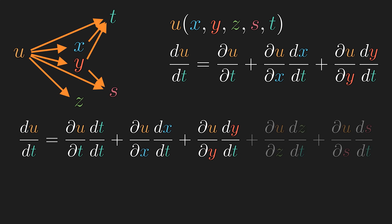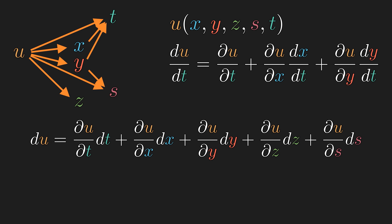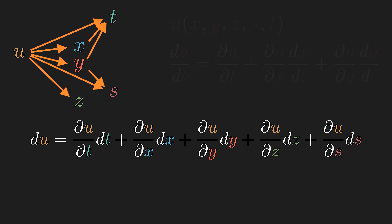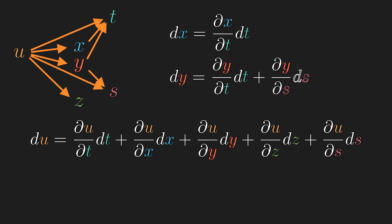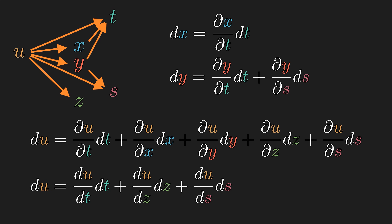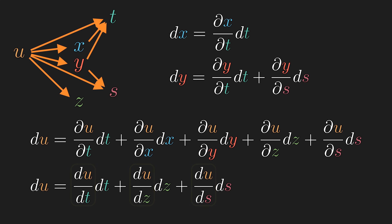This begs the question: what is the differential of u? We can start with the naive definition, then simplify. We want to remove all intermediate variables. x depends only on t, so dx equals the derivative of x with respect to t times dt. And dy has two terms, since y depends on both t and s. The last step is to rearrange and write this as a linear combination of differentials of terminal variables. Notice how the coefficient for each differential is the total derivative. For example, dt gets three contributions — directly and indirectly from x and y — which is precisely the total derivative du/dt.